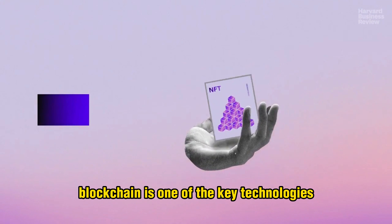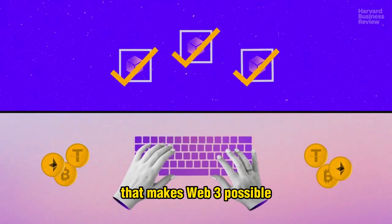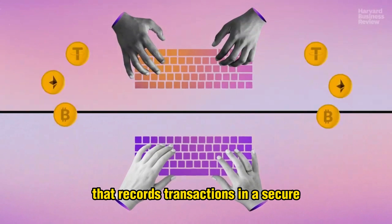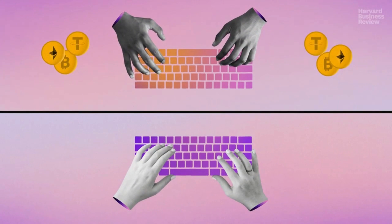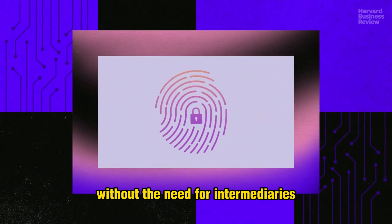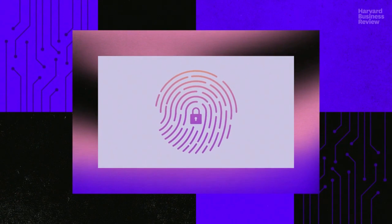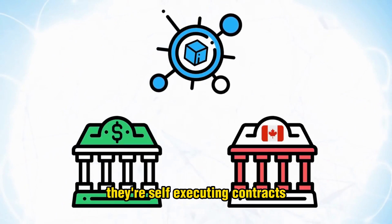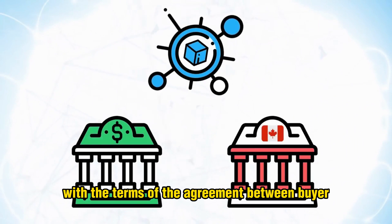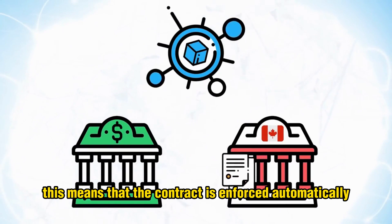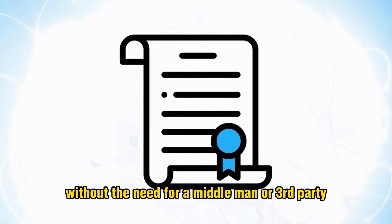Blockchain is one of the key technologies that makes Web 3 possible. It's a kind of digital ledger that records transactions in a secure and transparent way, allowing users to interact with each other directly without the need for intermediaries. Smart contracts are another important component of Web 3 — self-executing contracts with the terms written directly into code, enforced automatically without the need for a middleman or third party.